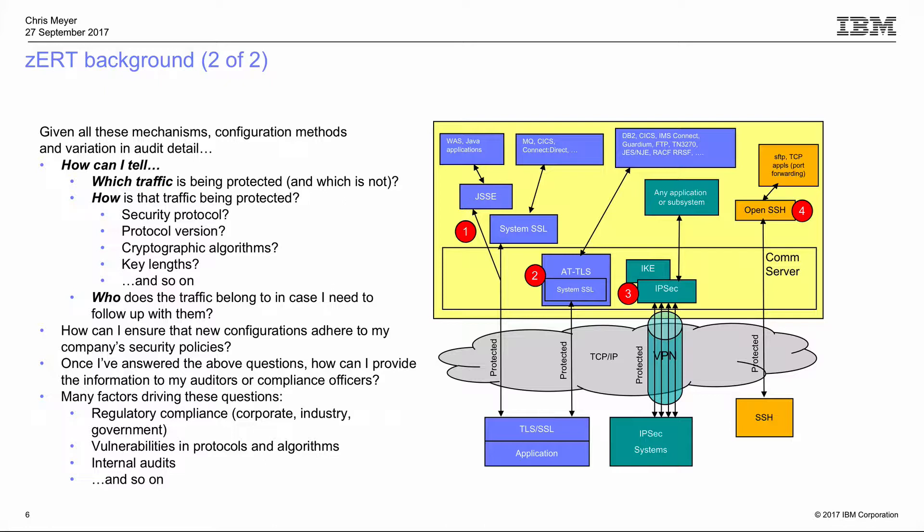And finally, who does the traffic belong to on the z/OS system? If you do see a weakness, you want to be able to follow up with whoever the owner of that traffic is to be able to strengthen the protection.